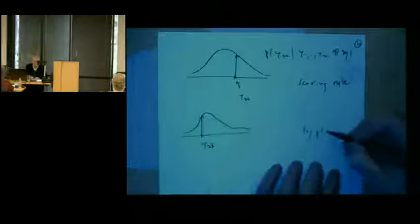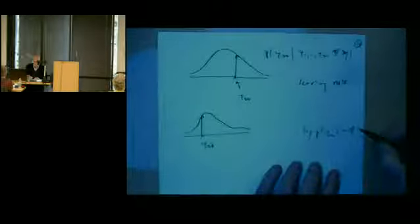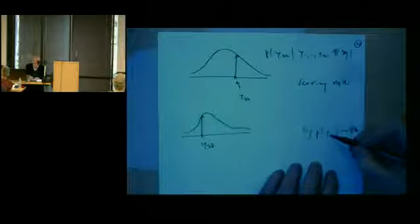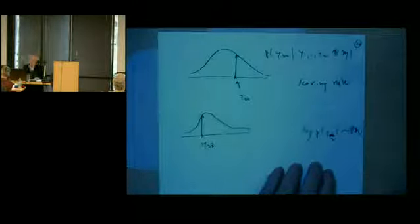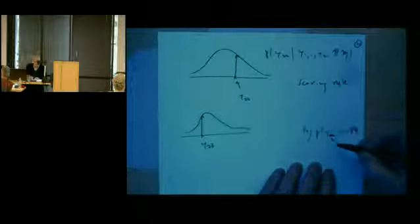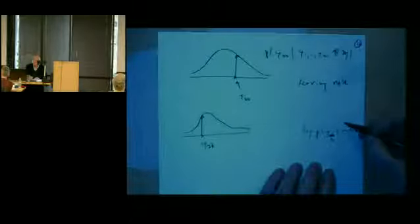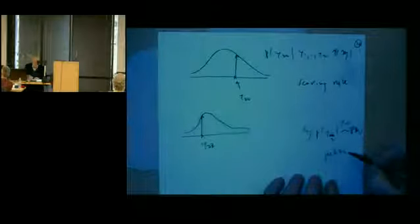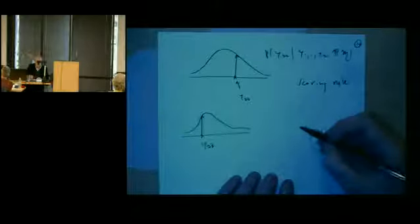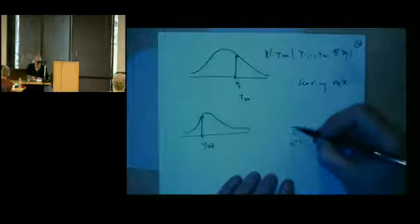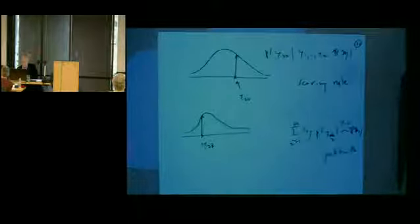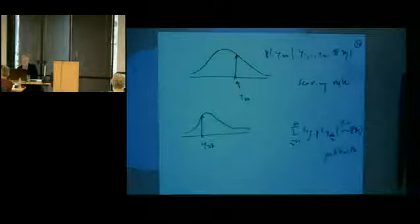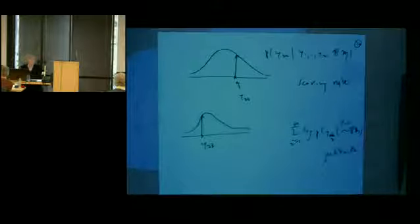You work out the logarithm of the height of the predictive distribution for Y22 given all the other data values. A simple way to do it would be to compute the logarithm of the height of the predictor for observation i using the whole rest of the data set — this is Y sub minus i, standing for the whole rest of the dataset with observation i removed. This is a jackknifing kind of idea where you leave one observation out. To get a composite measure across all data points, you either add them up or average them.